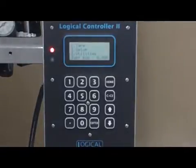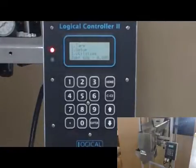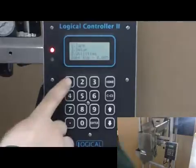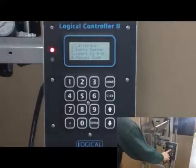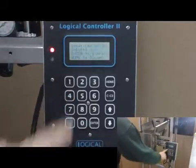Alright everybody, so to calibrate our Logical Controller II scale system, what we first want to do is strike the tear button for number one. We want to hit the utilities button number three, number one to calibrate.